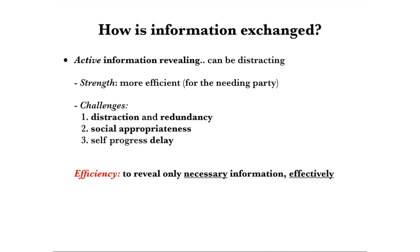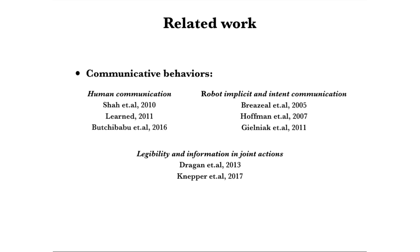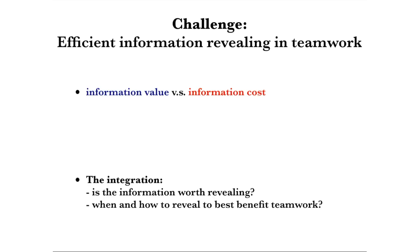To address these concerns and enable appropriate active communicative behavior, we propose to formulate the problem from the efficiency perspective — namely, how to reveal only necessary information in an effective way. From the literature of behavior science and robotics, human communication in teamwork was studied and certain strategies were applied to robots to enable implicit and intentful communication, shown to lead to more efficient teamwork with positive perceptions. From the information theory perspective, legible motion was proposed to generate trajectories and maximize information gain while maintaining efficiency. Here, we address efficient information revealing teamwork by considering the value of the information for the receiving party and the cost of communicative behavior generation for the revealing party. Altogether, we seek an integrated solution by answering: first, what information is worth revealing, and second, when and how to reveal to best benefit teamwork.